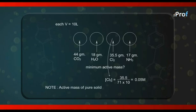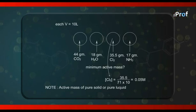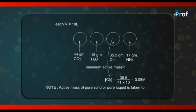What is the active mass of a pure solid or a pure liquid? The active mass of a pure solid or pure liquid is taken to be equal to unity. Every solid and every liquid has its own concentration in terms of mole per liter, but since the concentration of a pure solid or pure liquid remains constant during the course of a chemical reaction, for the sake of convenience it is taken to be equal to unity.